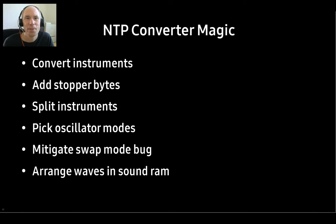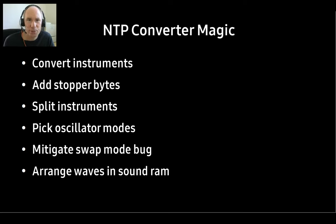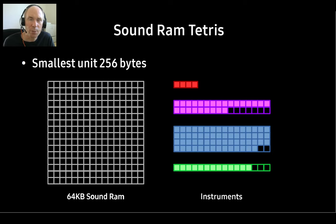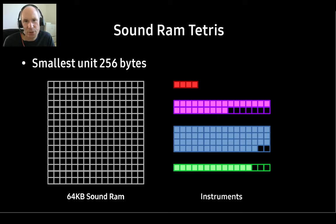Everything that you heard so far is covered by NTP. The NTP converter will convert instruments — including the shifting of byte values — it'll add stopper bytes automatically, split instruments if they are looped, pick the optimal oscillator modes like swap mode, free run, or one shot, and it'll take into consideration if waves are of an ideal size. It will try to mitigate the swap mode bug, and it will arrange the instruments in sound RAM. The lengths can only be 256 bytes, 512 bytes, and so on, and they have to be placed only on boundaries of the same value.